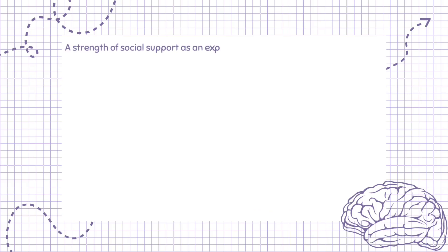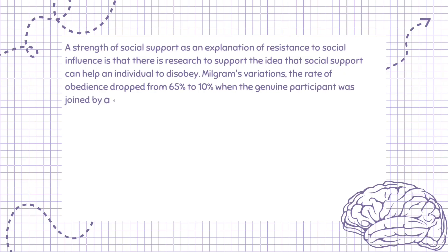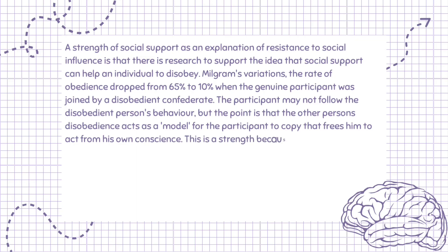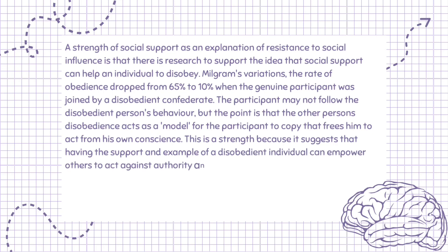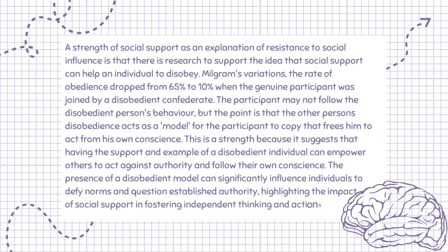A further strength is that there is research to support the idea that social support can help an individual to disobey. In Milgram's variations, the rate of obedience dropped from 65% to 10% when the genuine participant was joined by a disobedient confederate. The participant may not follow the disobedient person's behaviour directly, but the other person's disobedience acts as a model that frees the participant to act from their own conscience, empowering others to act against authority and highlighting the impact of social support in fostering independent thinking.